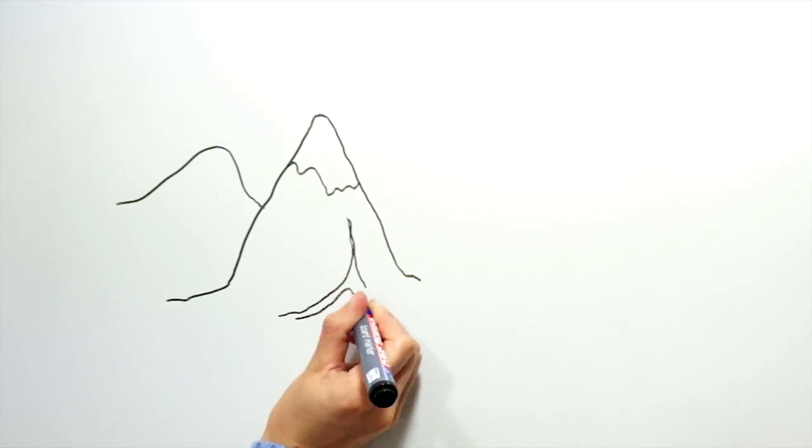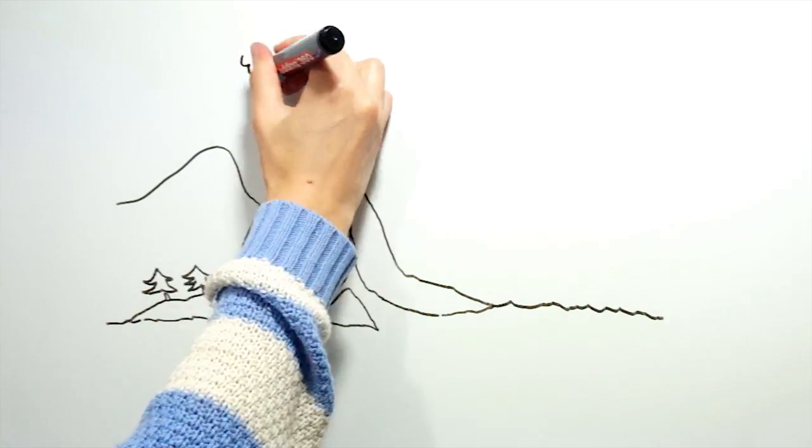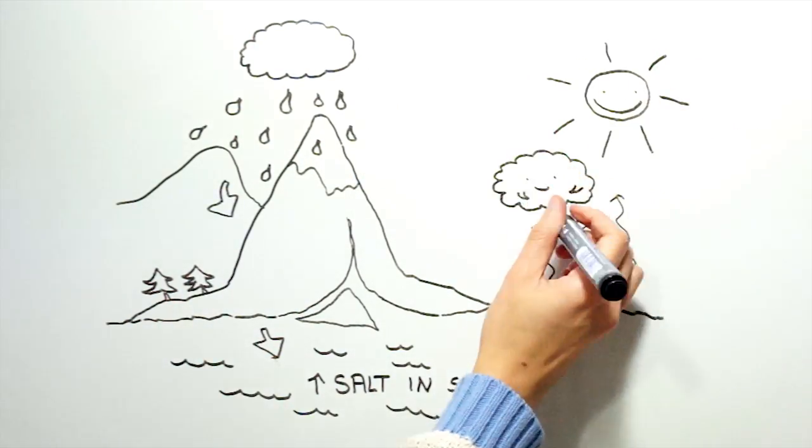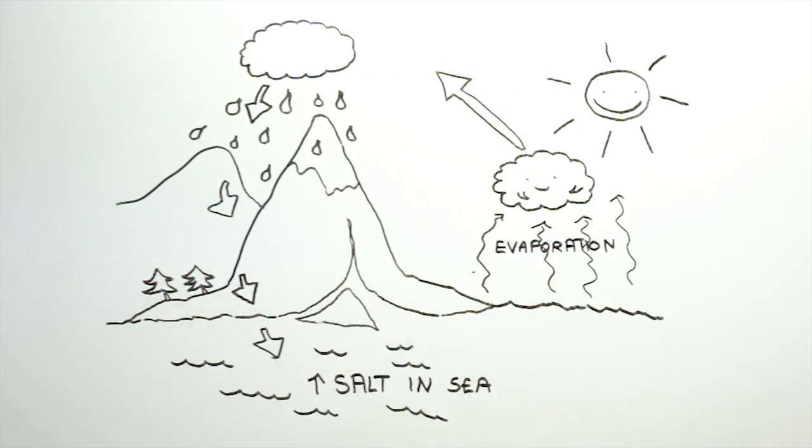The water in the sea will then evaporate and form clouds, which will then rain back down on the land, washing even more salt into the sea. But the salt is too heavy to evaporate, and so can't escape the sea.